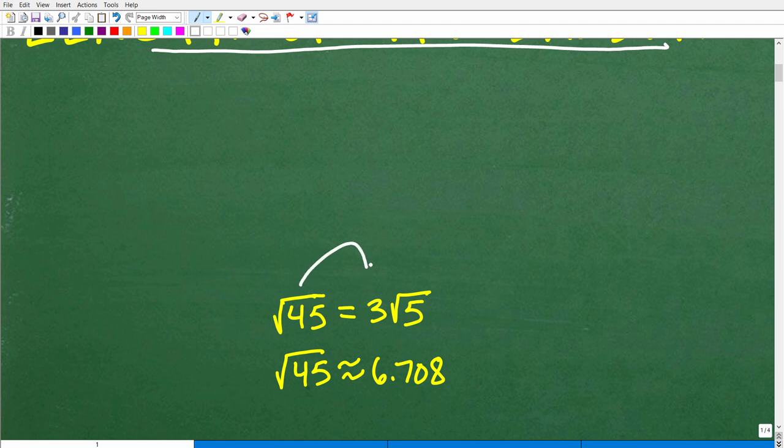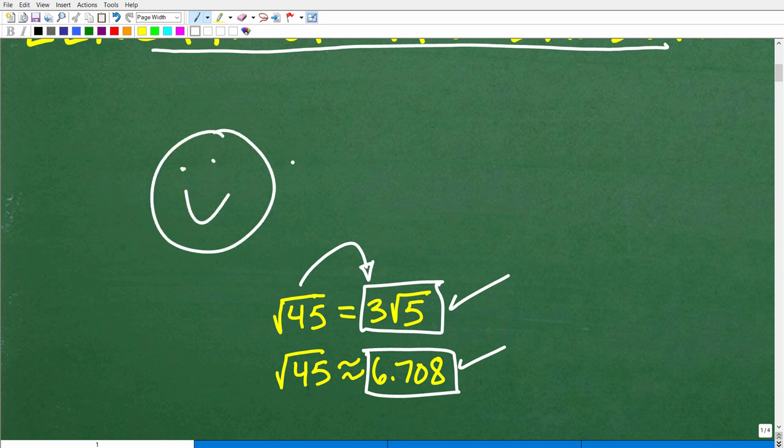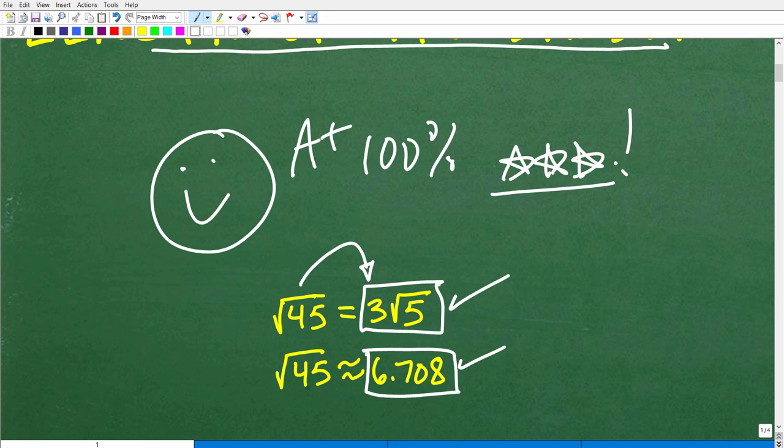But you wouldn't want to leave your answer like that. If you got the square root of 45, I would kind of accept that. But really, you want to reduce or simplify that radical to 3 square root of 5. And that is also, if you actually use your calculator, approximately 6.708. So I'm really kind of looking for these two. But if you got square root of 45 or this or this, I'm going to give you full credit and a nice little happy face. It's an A plus 100% and a few stars. Nice job.